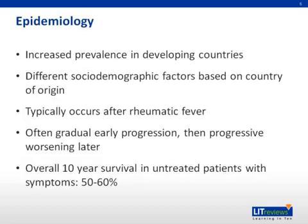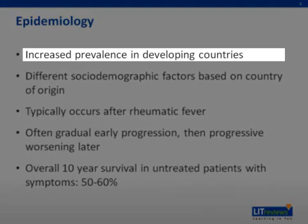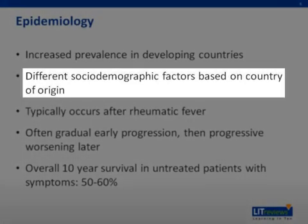Mitral stenosis is an obstruction to the flow of blood into the left ventricle at the mitral valve. There is a high prevalence of mitral stenosis in developing countries due to the large amount of rheumatic fever and rheumatic heart disease. In India, for example, rheumatic heart disease was found in 6 out of 1,000 schoolchildren, while only being found in 0.5 per 1,000 in developed countries. The rate of progression is also significantly faster in developing countries, with most patients becoming symptomatic as either teenagers or young adults.